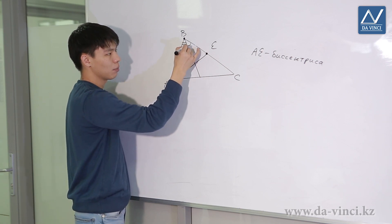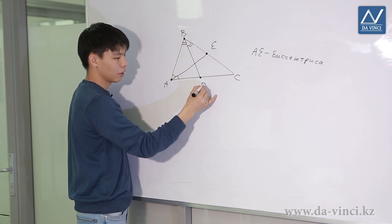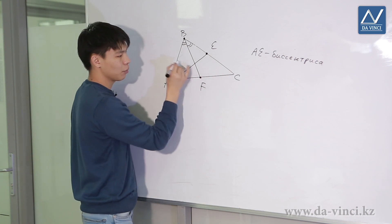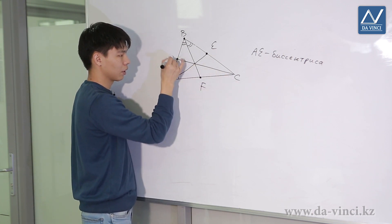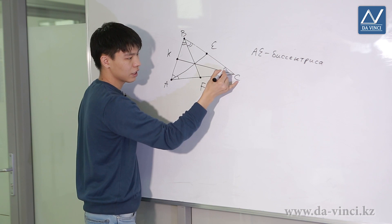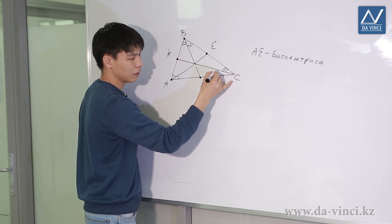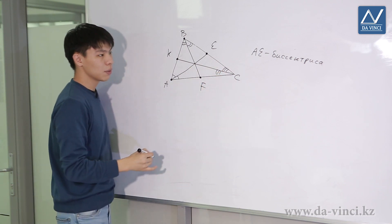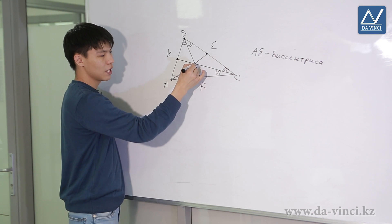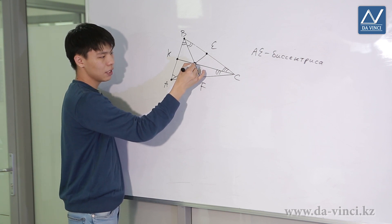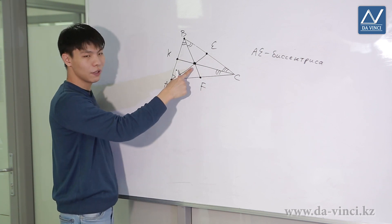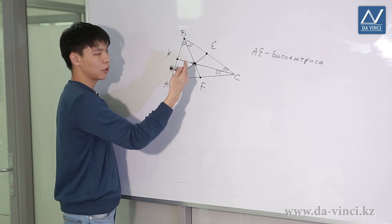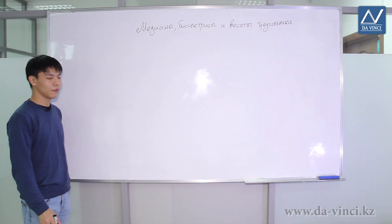I can also draw a bisector from point B — that is, angle B is divided in half — and in the same way I can draw a bisector from point C, let's say K, and the angle C is also divided into two equal angles. The property of the bisector is the same as that of the median: all three bisectors intersect at one point, but this point is not the intersection point of the medians — they are coincident only in certain types of triangles.